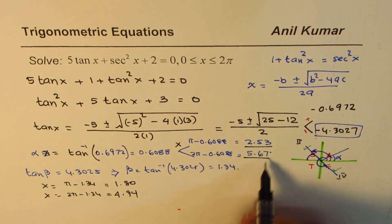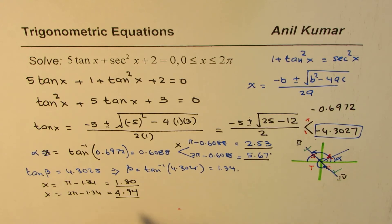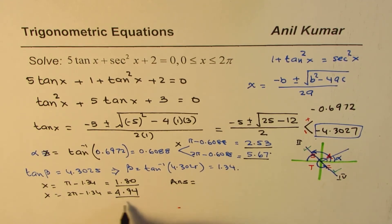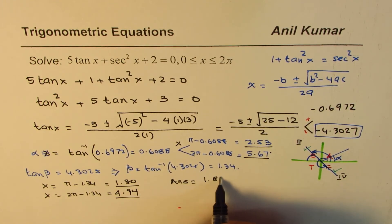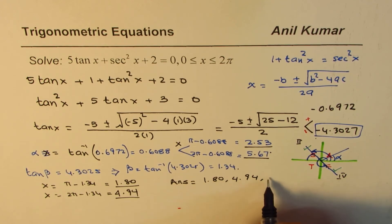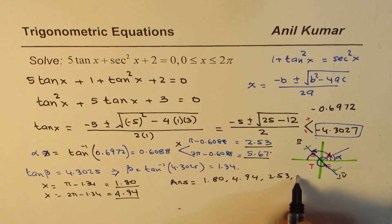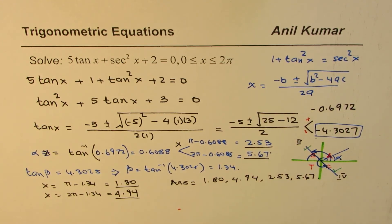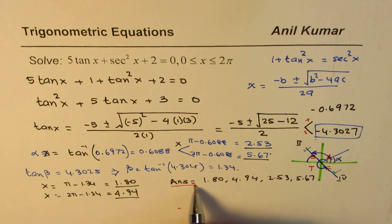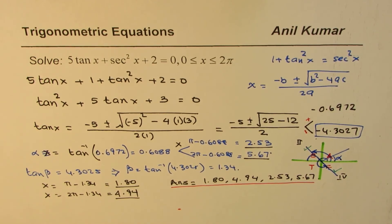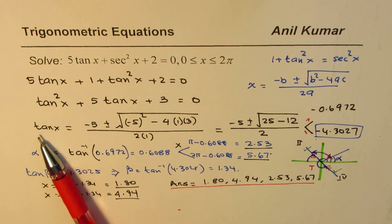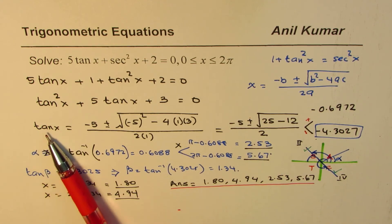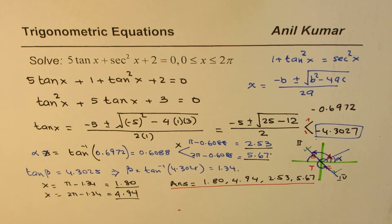We now have four solutions, as expected. All four answers in radians are: x = 1.80, 4.94, 2.53, and 5.67. Radians is a ratio, so even if you don't write the unit it is understood.